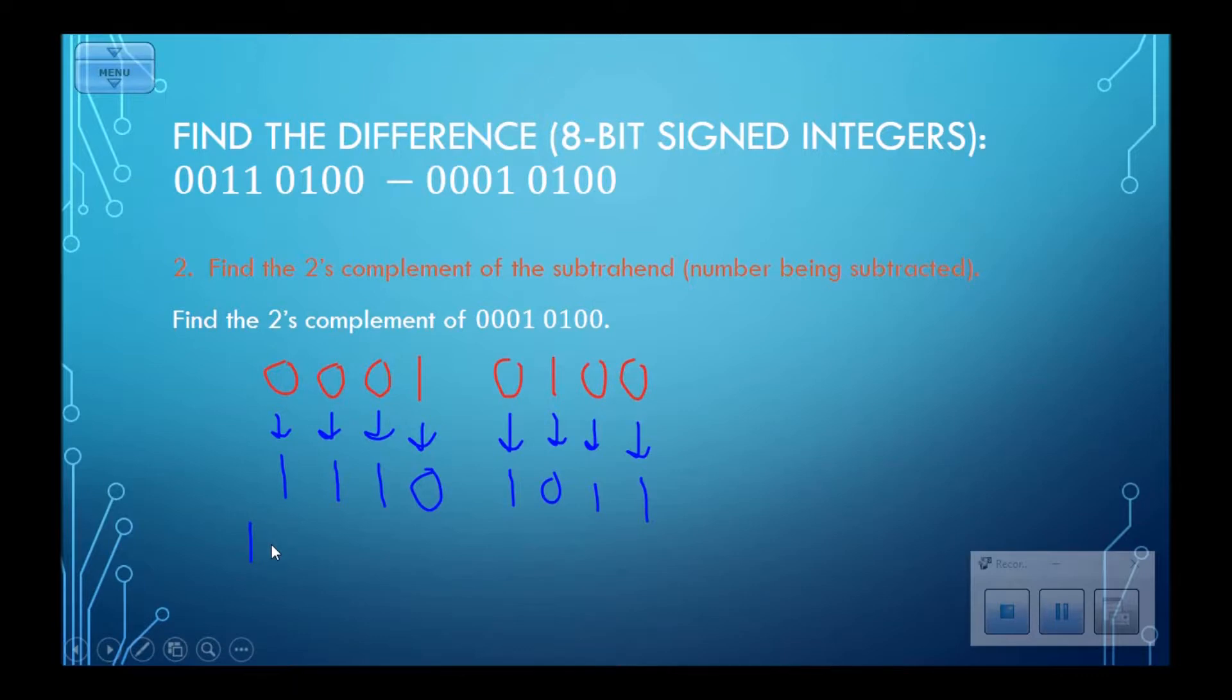And then I need to add 1 to the one's complement here to get the two's complement. That will give me, 1 plus 1 is 0 carry a 1. So the two's complement of the subtrahend is 1110 1100.